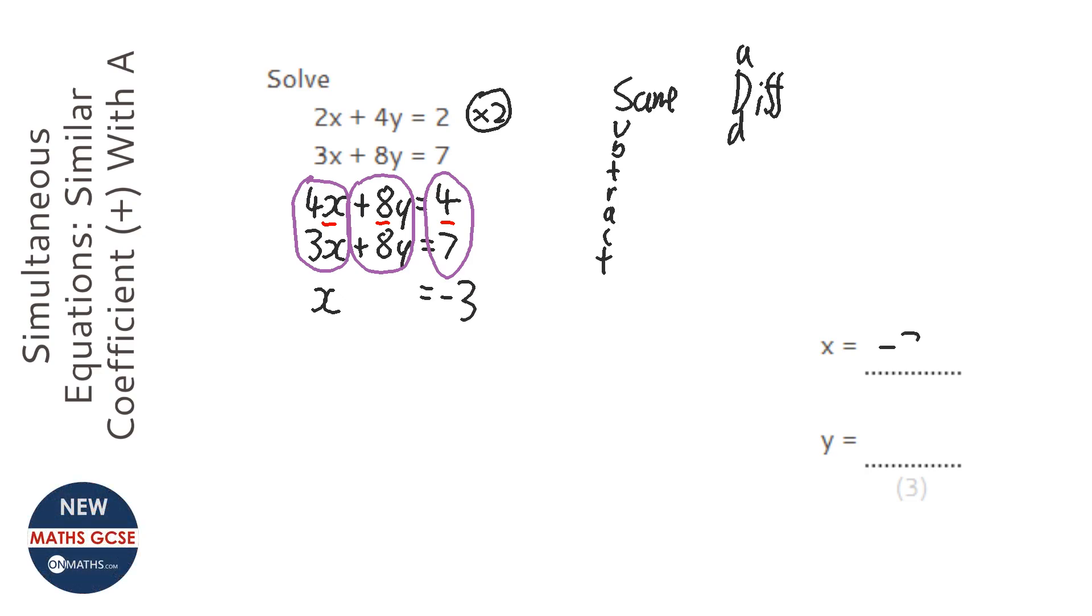So x is minus 3. But that's only half done, because we need to find out what y is. So I'm going to look at that first equation, and I'm just going to substitute in the value for x. So 2 times minus 3 plus 4y equals 2.